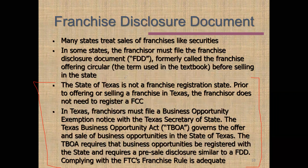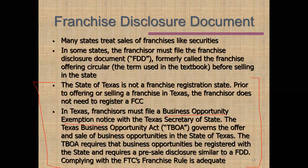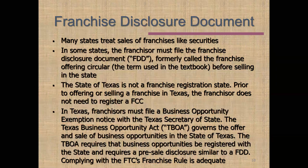Some states are what are called franchise registration states — they treat franchises as a security and require that it be registered before it can be sold in that state. Texas does not require that, but it does have a statute that puts some responsibilities on the franchisor called the Business Opportunity Act. The document franchisors need to file is called the Business Opportunity Exemption Notice. All the franchisor has to do is file the information already provided to the FTC, so it's a relatively minor obligation — just remember to file it with the state agency in addition to the FTC.